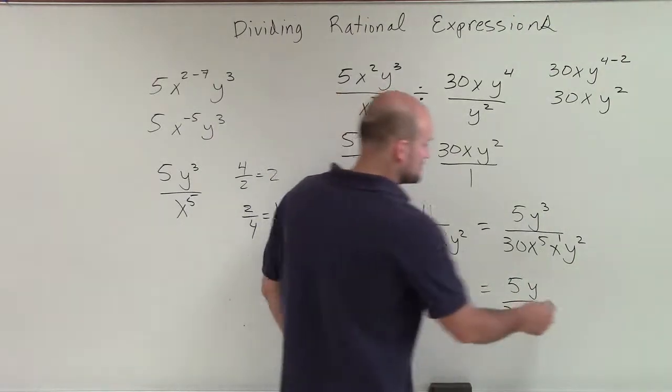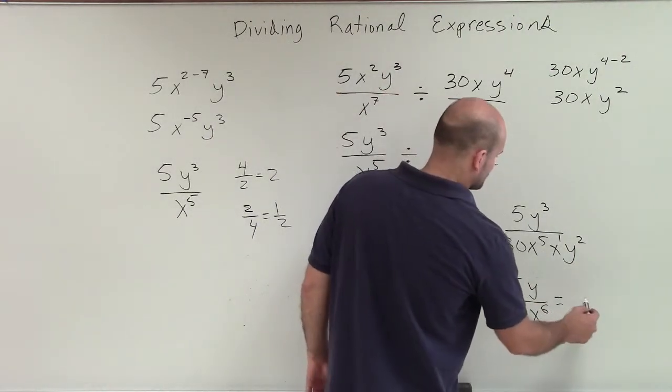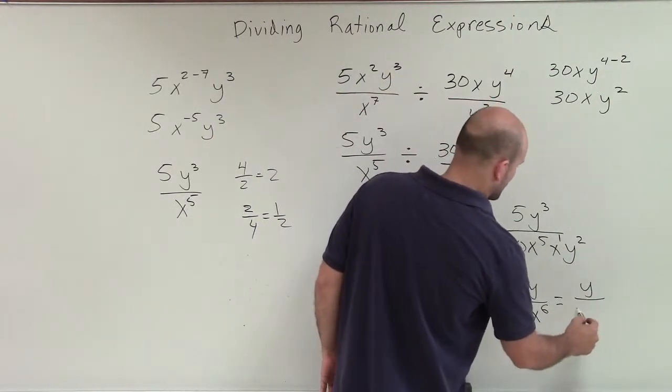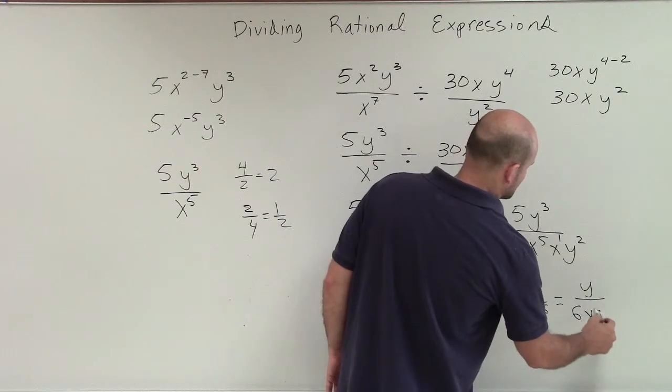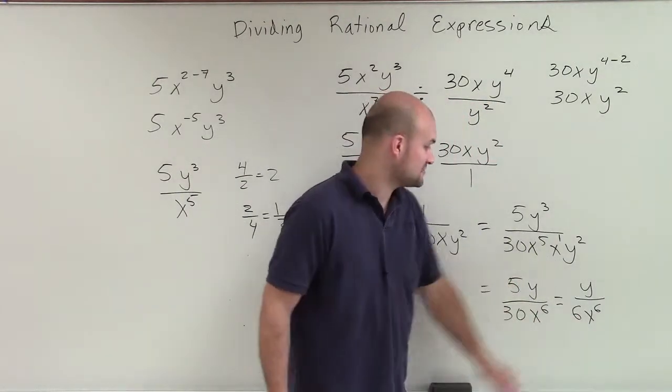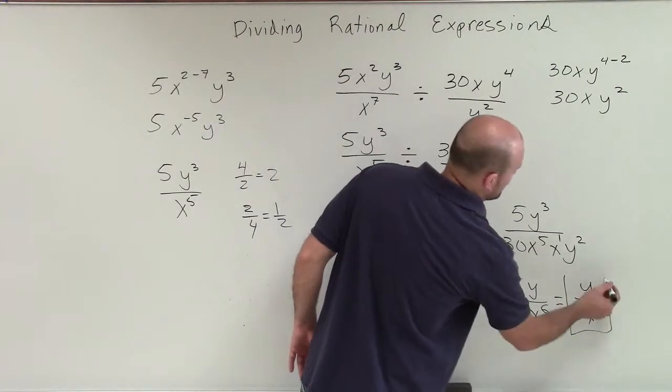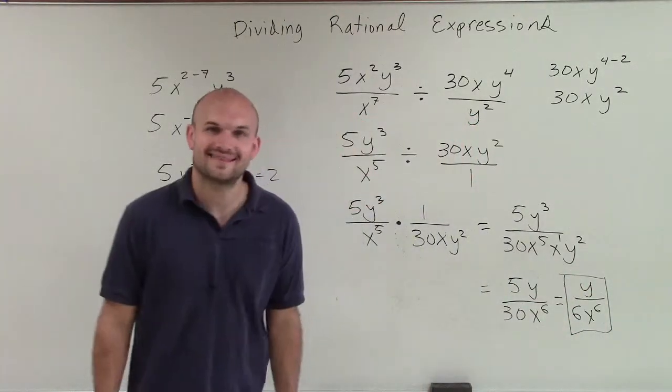However, I don't need to write the 1 up there. So my final answer is going to be y over 6x to the 6th. And there you go, ladies and gentlemen. That is how you divide rational expressions. Thanks.